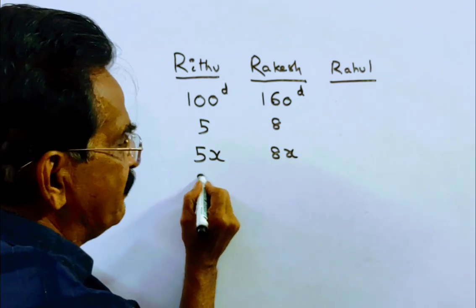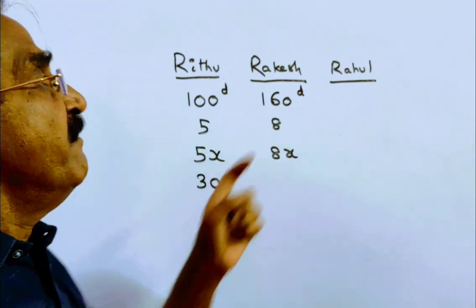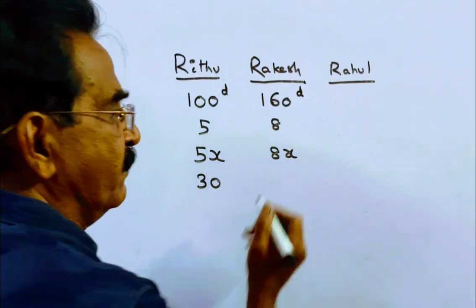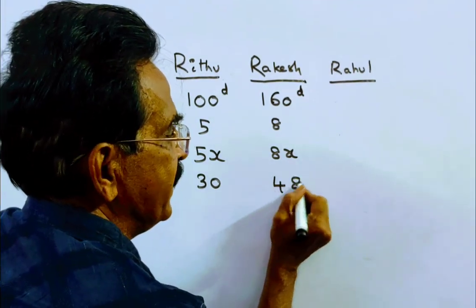So, Ritu can do 5 times 6 in 30 days. Whereas, Rakesh can do the work in 8 times 6, in 48 days.